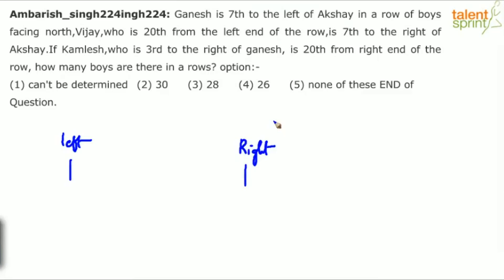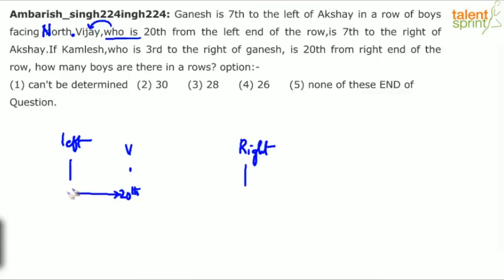The first point says Ganesh is 7th to the left of Akshay. Vijay is 20th from the left end of the row. So let us assume this is Vijay. Vijay's position is 20th from the left end.